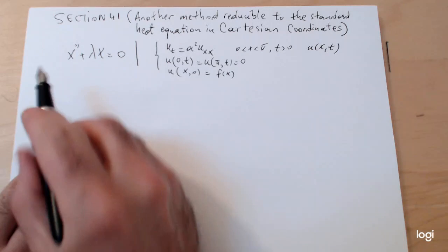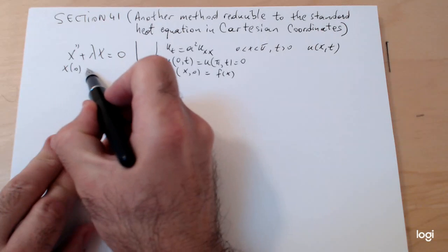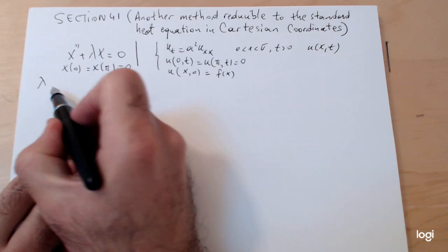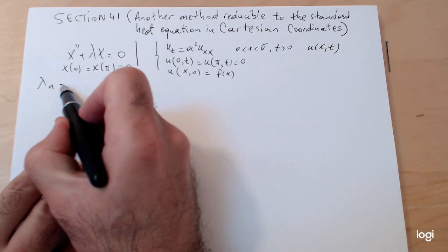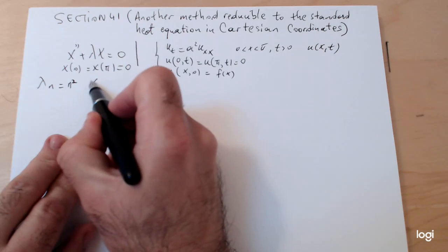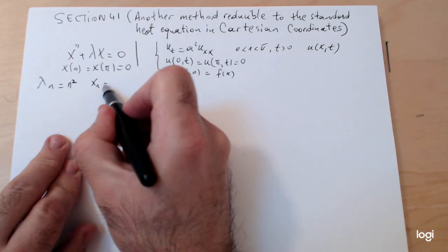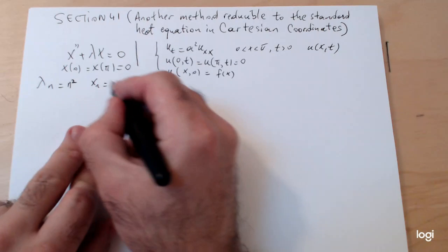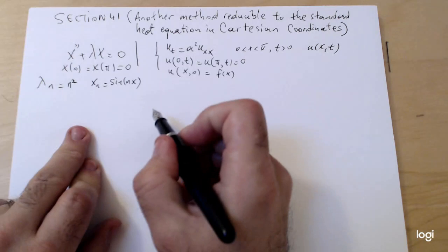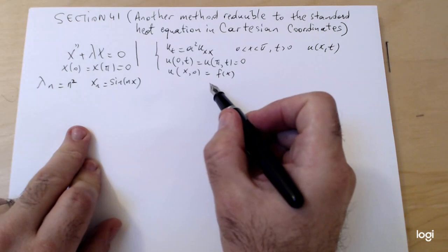Without going through all the details, when you do the separation of variables method for this problem, remember that in this case the Sturm-Liouville problem ends up being x double prime plus lambda x equals zero with boundary conditions x(0) = x(π) = 0, and the eigenvalues will be λ_n = n².